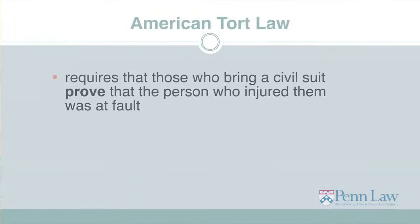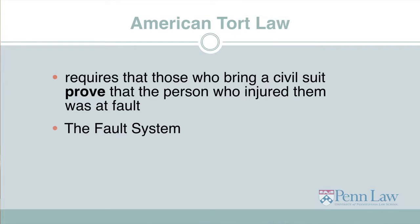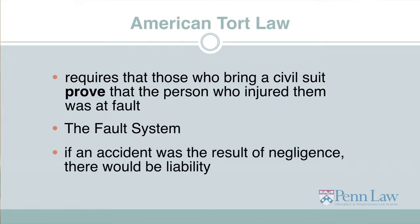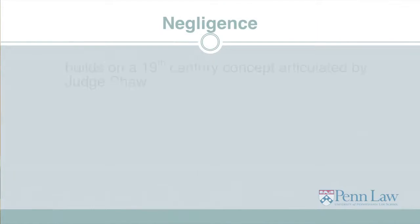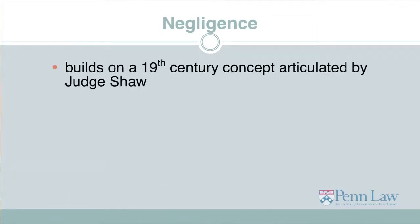American Tort Law generally requires that those who bring a civil lawsuit prove that the person who injured them was at fault. This is a distinctive though debated feature of our law, sometimes referred to as the fault system. In the case of fighting dogs, Brown v. Kendall, one man injured another accidentally. Under American Tort Law, if this accident was a result of negligence, there would be liability. However, if the accident was not due to negligence, there would not be liability. But what exactly is negligence? The contemporary definition of negligence builds on the 19th century concept articulated by Judge Shaw.